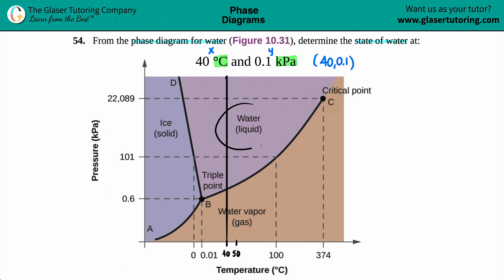Now we just have to find 0.1 kPa. On the y-axis, this is zero and it goes up to 0.6, so the middle is probably 0.3.